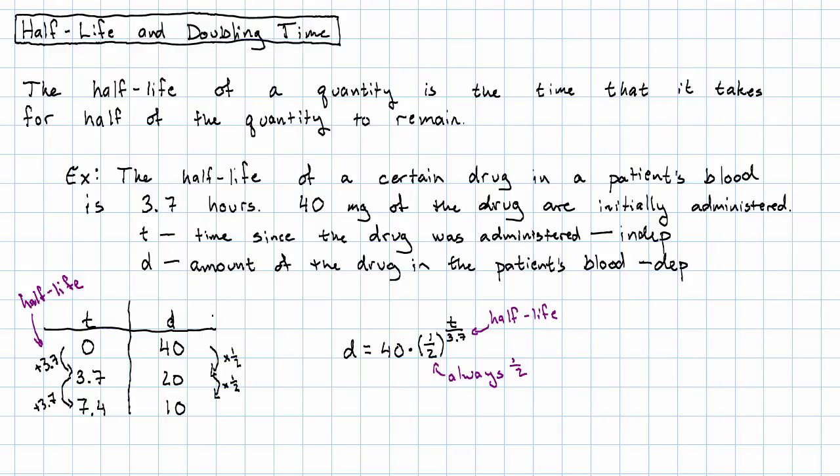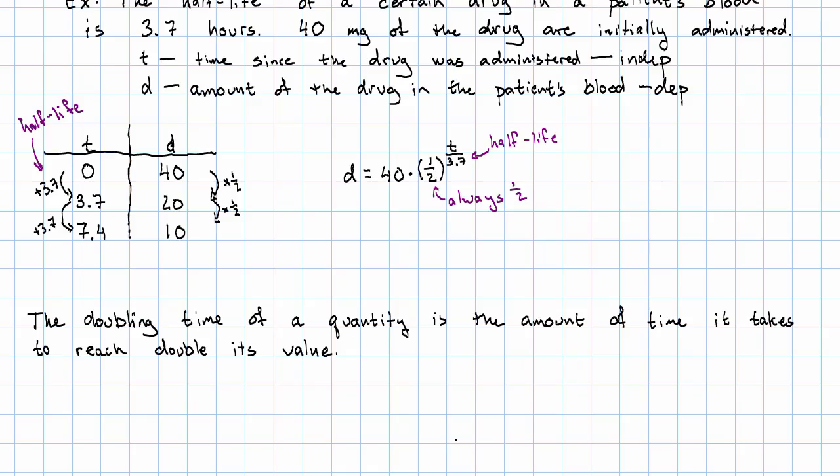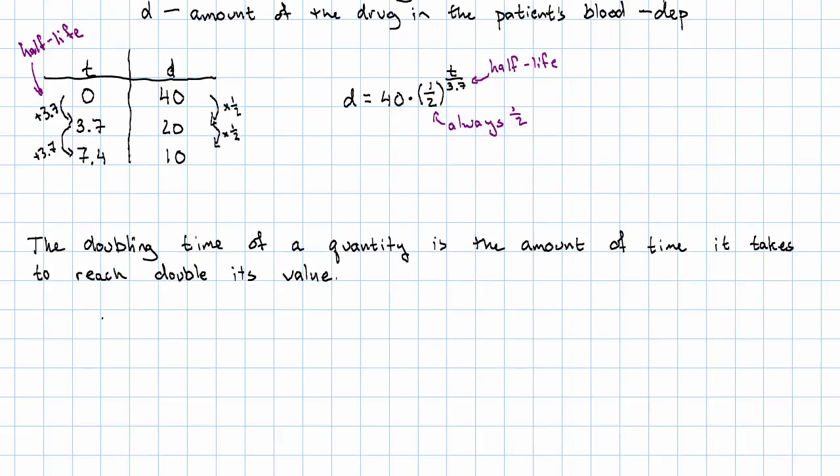If our dependent variable is getting bigger, we have the idea of a doubling time. The doubling time of a quantity is the amount of time it takes to reach double its value.